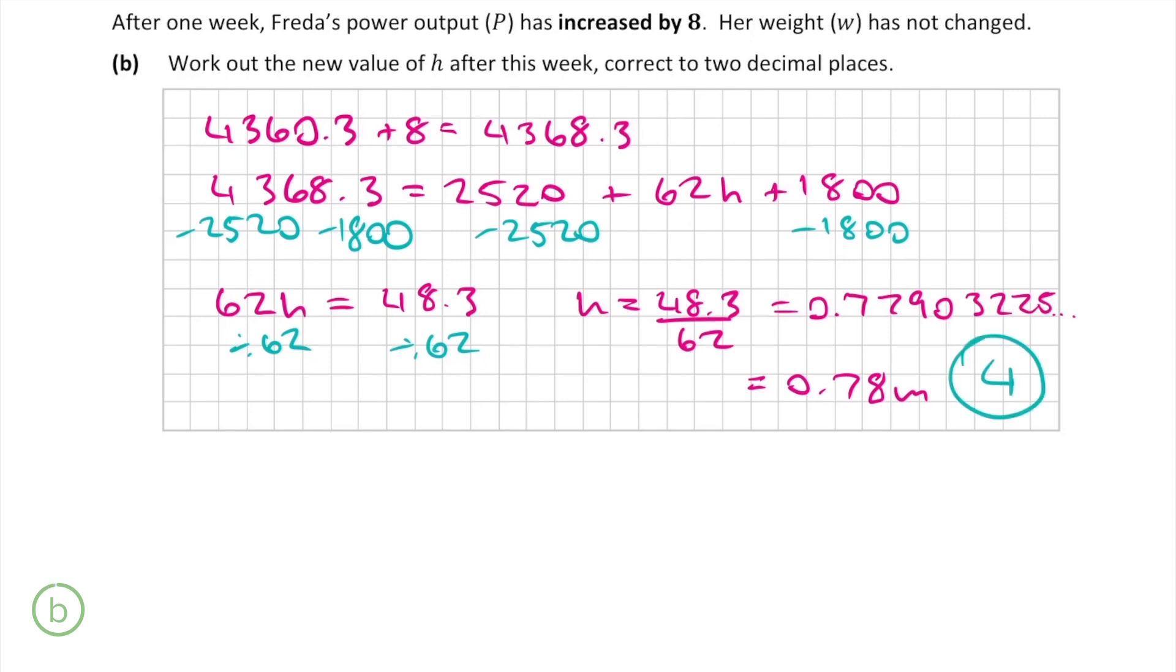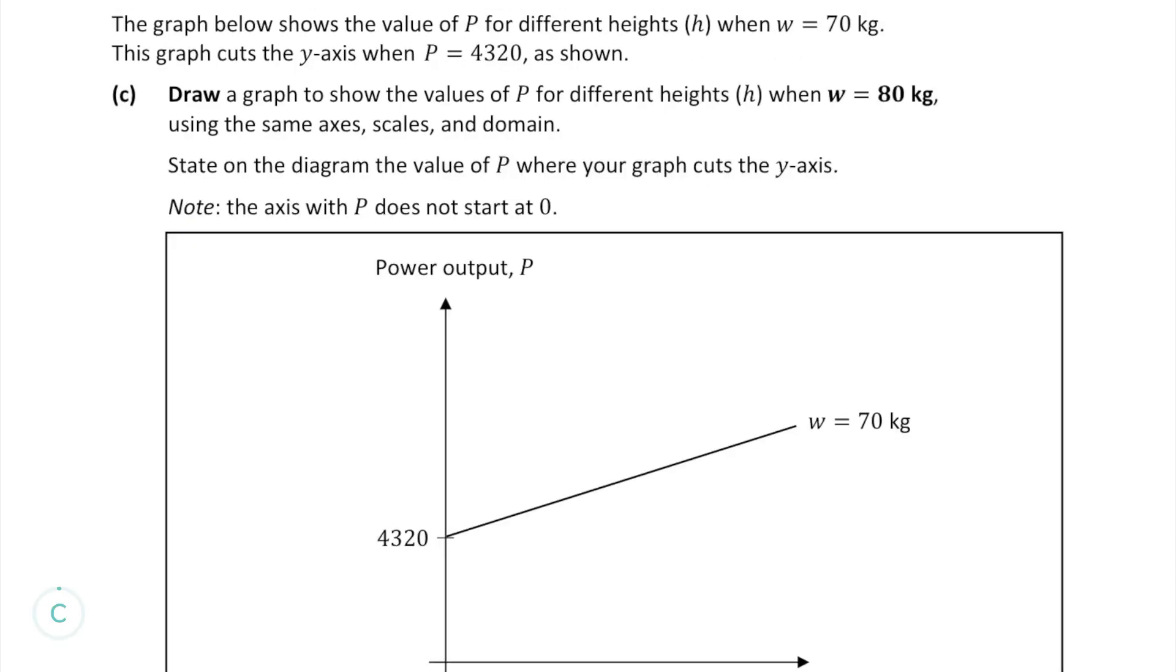Part b is worth another 4 marks. In part c, we're given a graph showing her power output when w is equal to 70 kg for different values of h, which is the height. This graph cuts the y axis when p is equal to 4320. The question asks us to draw a graph to show the different values of p for different heights h when w is equal to 80 kg. You also have to show where the graph cuts the y axis.